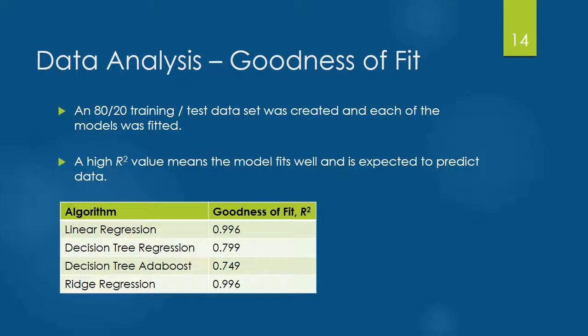Each of the models was fitted with an 80%, 20% training and test data split. The goodness of fit, or r-squared, was calculated. A high r-squared value means the model fits the data well and will predict the data more accurately. All of the models had an r-squared value of at least 0.749.